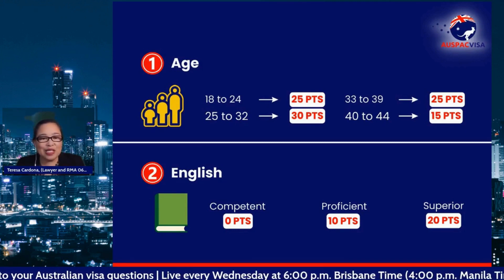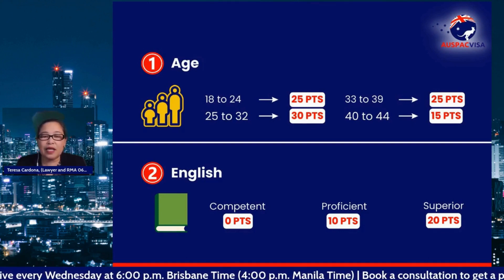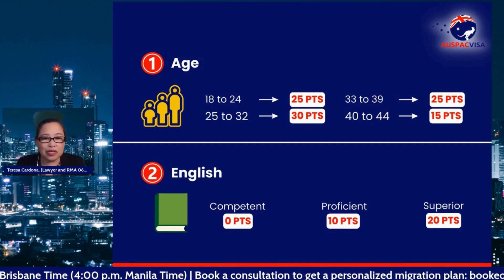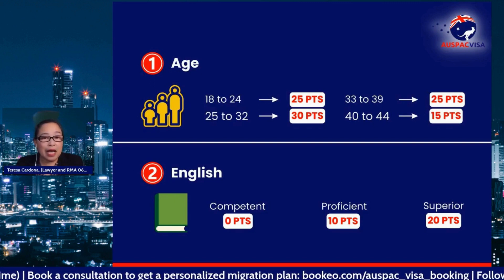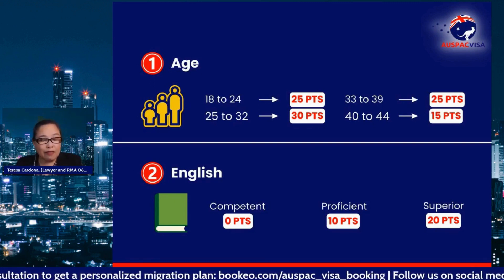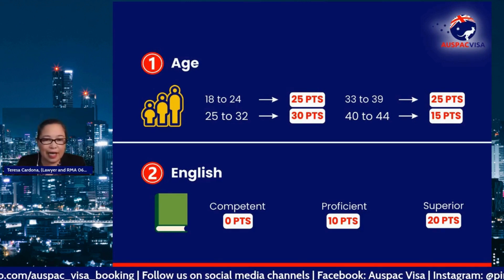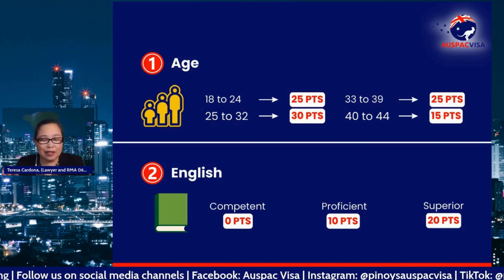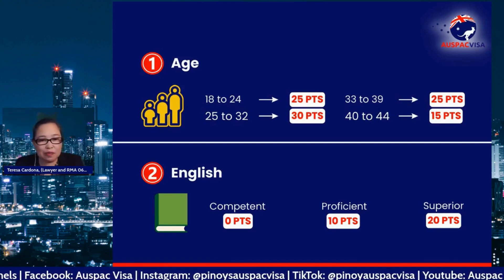For English, you can take PTE, IELTS, TOEFL, or Cambridge — all are accepted. However, some assessing authorities only accept IELTS. For example, for teachers, the AITSL only accepts IELTS. If you get 6.0 on IELTS, that will be zero points.